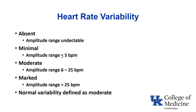Absent variability means essentially a straight line — very concerning. Even if the baby's not having decels, a straight-line tracing means they'll be thinking about delivery soon. Minimal heart rate variability is an amplitude range of less than five beats per minute. Moderate variability — generally considered normal — is a range between 6 and 25 beats per minute. Marked variability, which can also be a concern depending on what else you're seeing, is an amplitude range greater than 25 beats per minute.